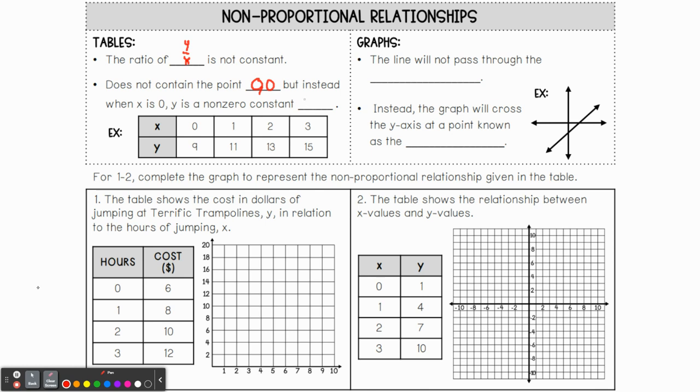Now, here's where it's going to look a little bit confusing. We're going to write zero comma Y indicating that Y is just not zero. It can be a negative number. It can be a positive number, but it is not going to be zero. So I hope that doesn't confuse you too much, but we don't have zero, zero anymore, but rather when X is zero, Y is going to be a number, anything but zero. So as far as the graphs go, the line will not pass through the origin or what we call zero, zero. Instead, the graph will cross the Y-axis at a point known as the Y-intercept.